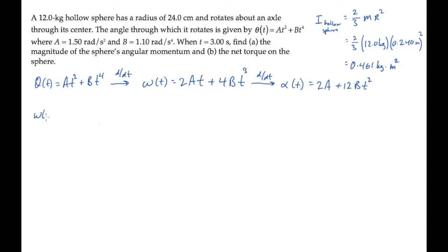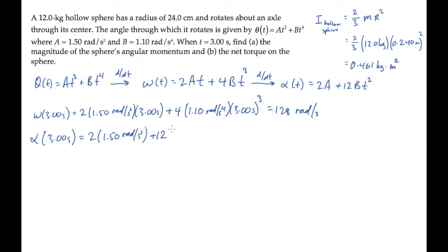We're asked in parts a and b to evaluate quantities when t equals 3 seconds. So before we do that, let's calculate omega and alpha at t equals 3 seconds by substituting that value for t. And you find that omega, the angular speed at 3 seconds, is 128 radians per second. That's how fast it's rotating. And alpha at t equals 3 seconds is equal to 122 radians per second squared. That's the magnitude of the angular acceleration.